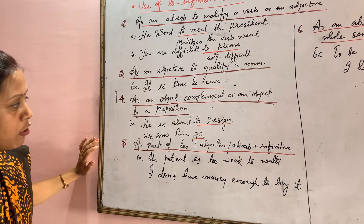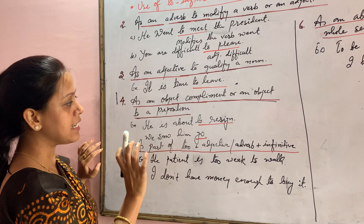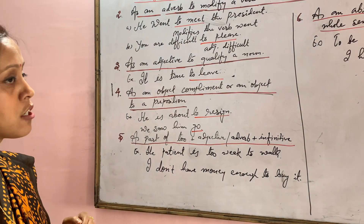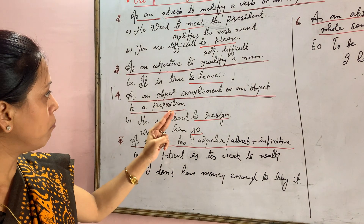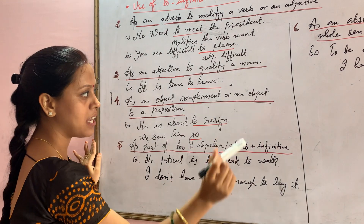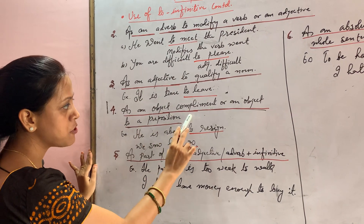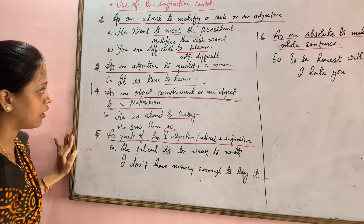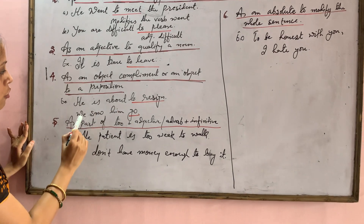The to-infinitive can also function as an object — either as an object complement or as an object to a preposition. For example, as an object complement: 'He is about to resign.' As an object to a preposition: 'We saw him go.'